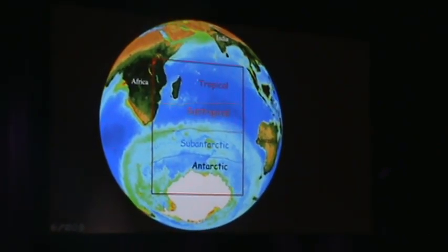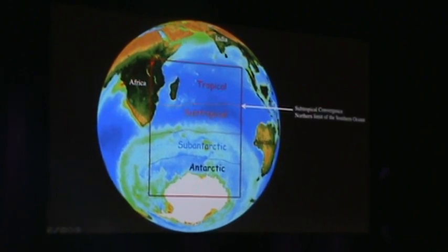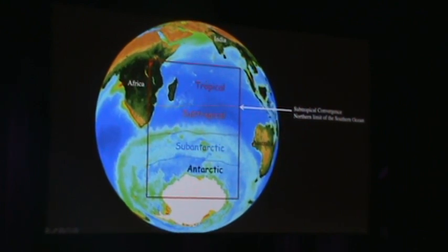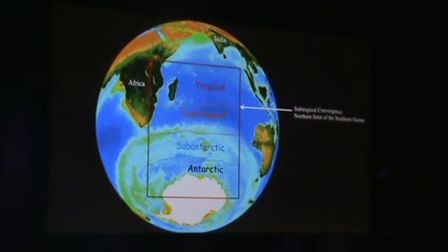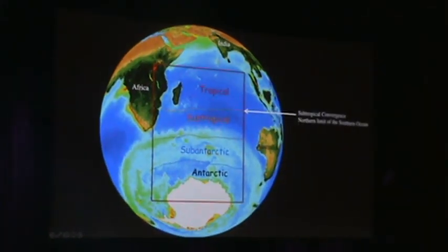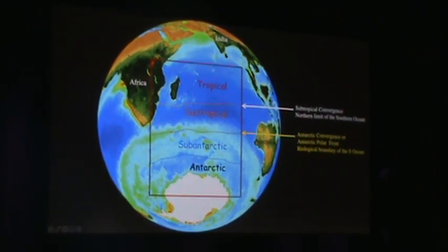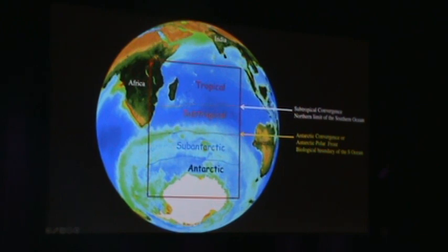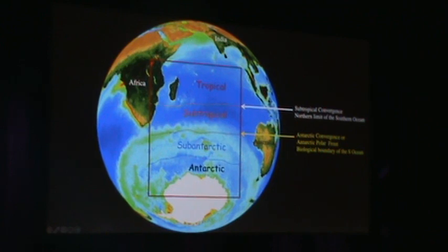So let's take a look at the ocean itself. The Southern Ocean is defined by this subtropical convergence — a temperature change between the tropical and subtropical regions. Then we'll take a look at the Antarctic convergence, or the Antarctic polar front, frequently referred to simply as the polar front. This separates the subtropical waters from the sub-Antarctic waters, and it is the major biological boundary of the Southern Ocean.